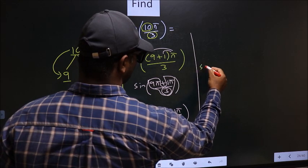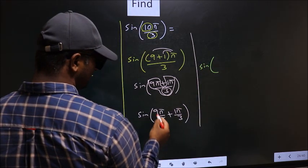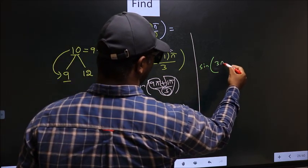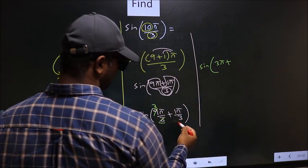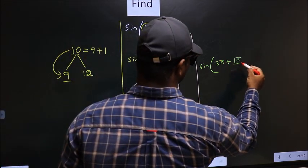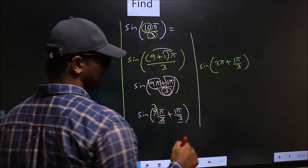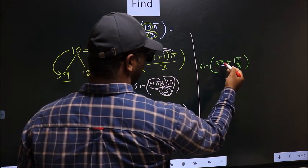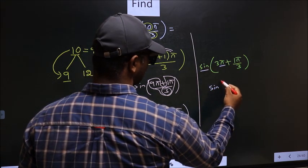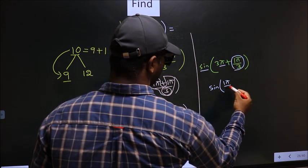Next, sin of 9π by 3—you cancel 3 ones, 3 threes. So we get 3π plus this angle will remain as it is, 1π by 3. Next, here we have π, so sine is not going to change. It will remain sine. We get sine of this angle, 1π by 3.